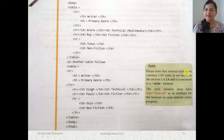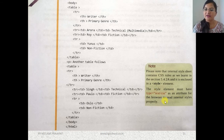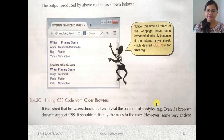Note that the internal style sheet contains CSS rules enclosed in the style element. The style element must have the attribute type="text/css" so the browser can read internal styles. Looking at the output, you can see both tables are displayed in blue color with the same style applied.